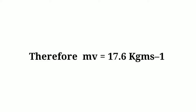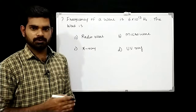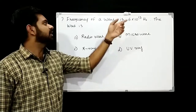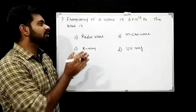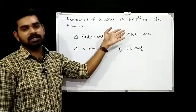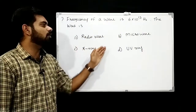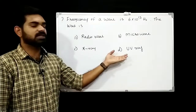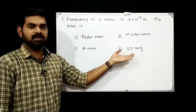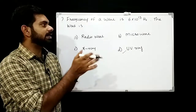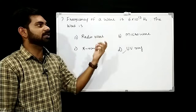The frequency of a wave is 6×10^15 Hz. Identify the wave. Option A: radio wave. Option B: microwave. Option C: X-ray. Option D: UV ray. The answer is option D, UV ray, as UV ray range lies around 10^15 Hz.